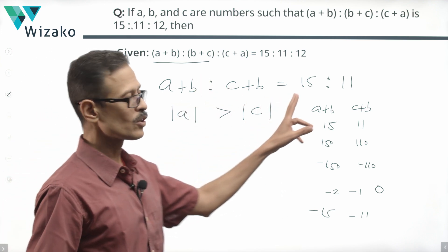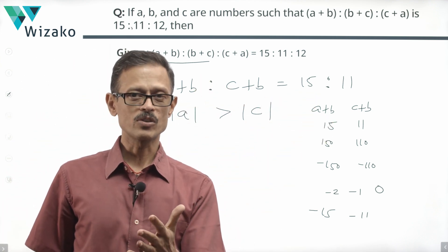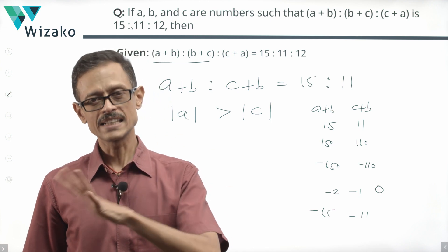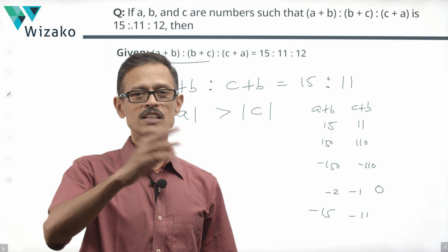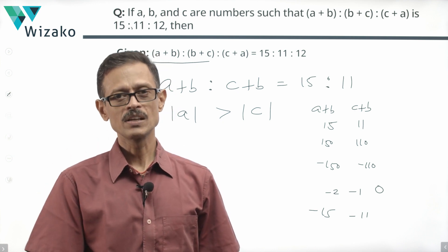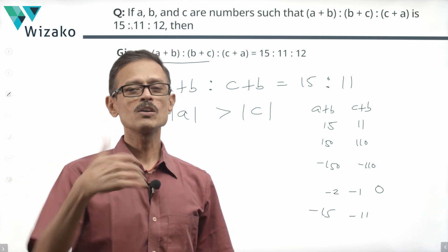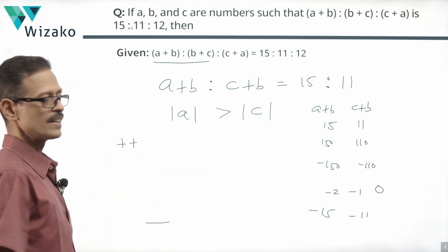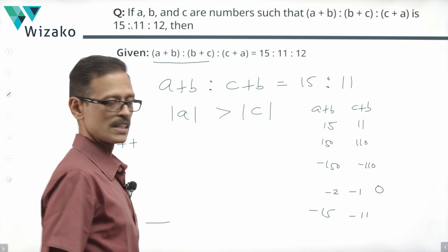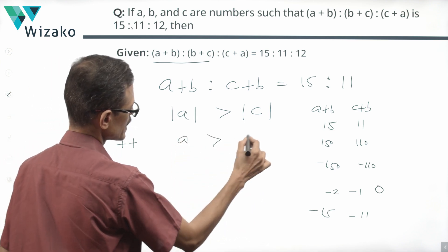We definitely know either a and c will both be simultaneously positive or will both be simultaneously negative. Else, what will happen is the ratio cannot be 15:11. It will have been -15:11 or 15:-11. So both are simultaneously positive or both are simultaneously negative. If both are positive, a is positive, c is positive. |a| is greater than |c| would have resulted in a being greater than c.